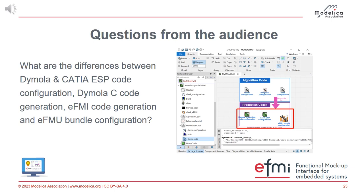The EFMU bundle configuration is the whole EFMU, and the only thing you can configure there is the name. If you don't give it a name, the default is derived from the package name, which can become very long and cause Windows path problems. When you try to build, it will give you an error saying your path exceeds the limit. So you can give it a name like M04, and that's good.